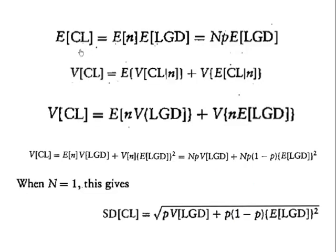The expected credit loss equals probability of default multiplied by loss given default, where loss given default equals credit exposure multiplied by (1 minus recovery rate). For N instruments, if all N instruments have the same probability of default P, the expected credit loss is N × P × expected LGD. For a single instrument, ECL = P × expected LGD.